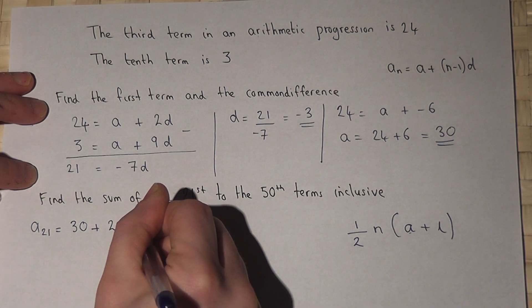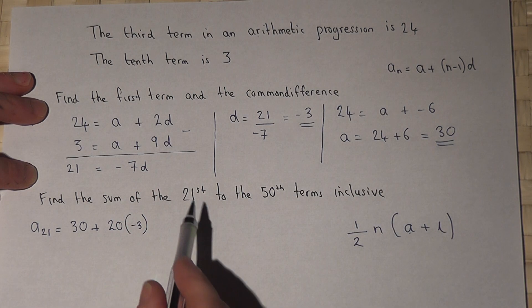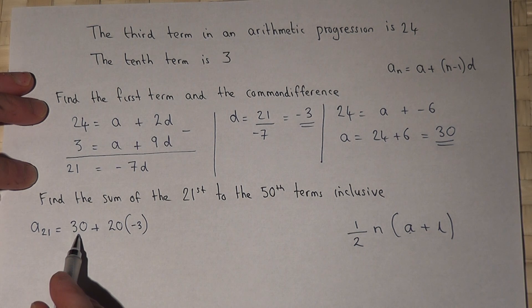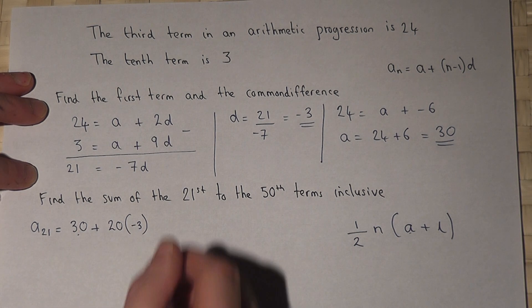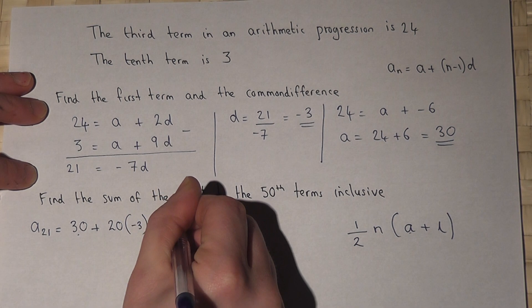So the 21st term is 30 take away 60, which is minus 30.